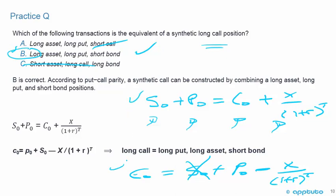We started with the put-call parity formula, adjusted it, and found the equivalent of a synthetic long call. Don't forget: long call means positive. You can also replicate a synthetic short position by changing the sign. Always read the question carefully to distinguish synthetic long from synthetic short, as that changes the ordering. With the basic memorization of S0 plus P0 equals C0 plus X over (1 plus R) to the T, all these questions become fairly easy. That's the last slide for this LOS — thank you.